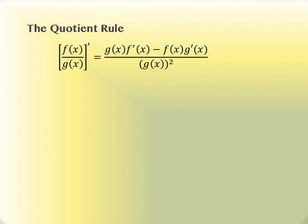You may notice the numerator of the quotient rule looks an awful lot like the product rule. What's different? First, there's subtraction in the numerator instead of addition. Because there's subtraction, the order matters — unlike the product rule where you could do it in any order. Second, there's a denominator: the denominator of the original function, squared, appears in the denominator of the derivative.